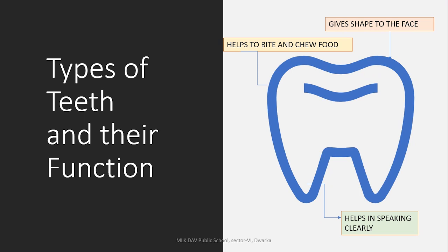Now, in this video we are going to focus on the teeth — what are the types and what is the function? The main purpose of teeth is to bite and chew the food. Teeth also give shape to our face. Have you seen the face of a small baby or an old person? It does not look the same as yours. Also, have you noticed the way they speak? Without teeth, our speech is also not clear.